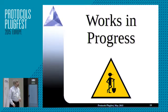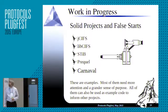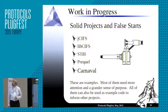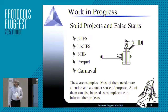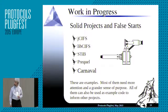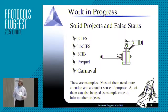So let's talk about some of those toolkits. JSIFS is one. I'm going to talk about something called LibSIFS, and also Stib, Prequel, and Carnival — which is the biggest one on the list. These are examples. Most of them need more attention and a grander sense of purpose, but all of them can be used as example code, learning tools, et cetera.